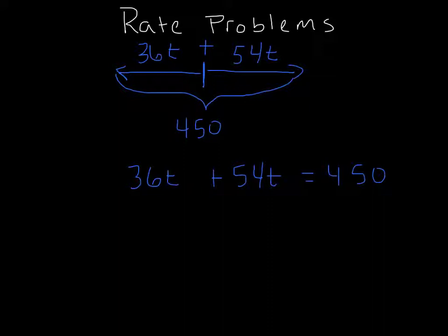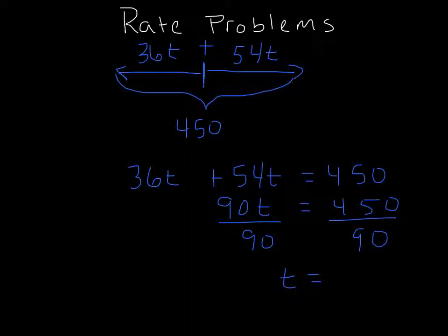All you've got to do now is just solve it. So 54 and 36, that equals 90. So 90t equals 450, divide by 90, and t equals 5. So in five hours, the two boats will be exactly 450 miles apart.